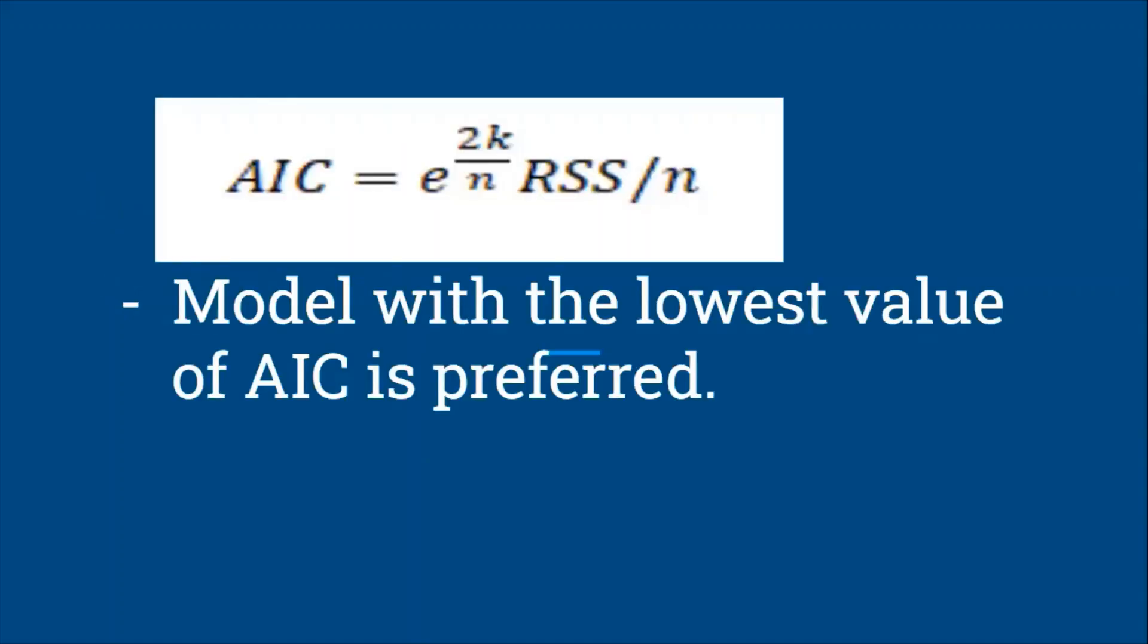Next is the Akaike information criteria, AIC. The formula of AIC is e to the power 2k divided by n times residual sum of squares divided by n. k here is the number of regressors including the intercept, and n is the number of observations. In comparing two or more models, the model with the lowest value of AIC is preferred.